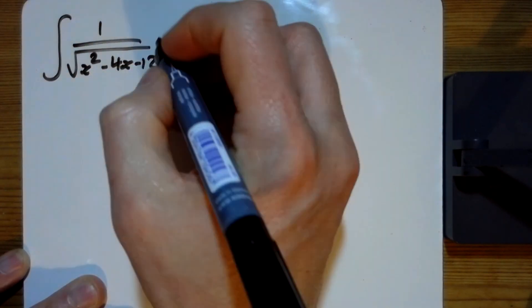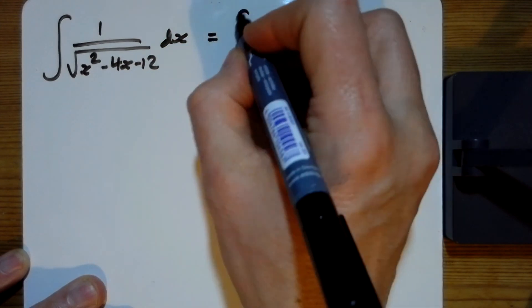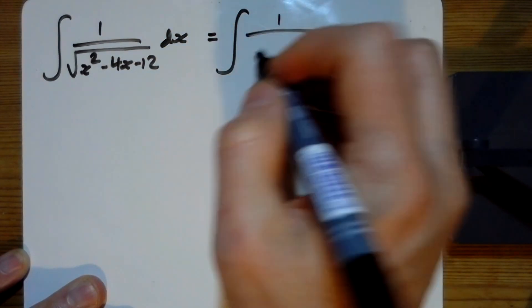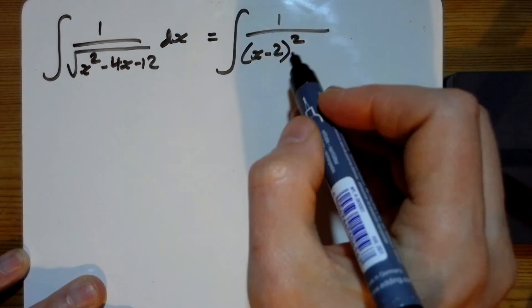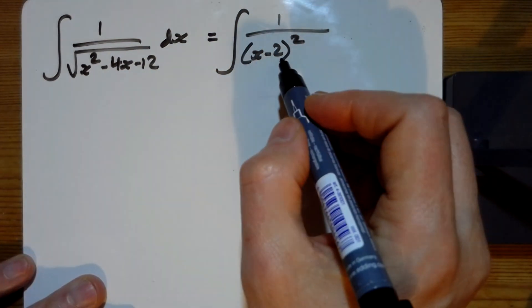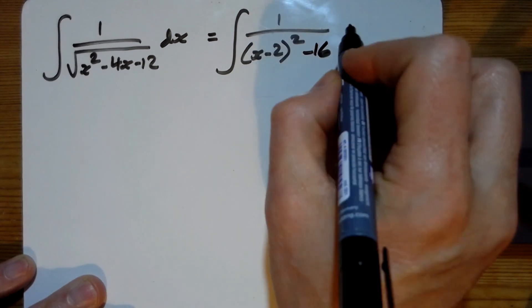So for question 21, the idea of these is that we're going to need to complete the square for these bottom bits. Completing the square here we've got x take away 2 all squared, take away the 2 squared which is 4, and take away the 12, so a grand total of take away 16 there.